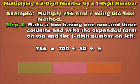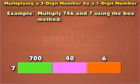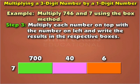Step 2: Make a box having one row and three columns, and write the expanded form on top and the one-digit number on the left. Here, we write seven hundred, forty, and six on top, and seven on the left. Step 3: Multiply each number on top with the number on the left and write the results in the respective boxes.